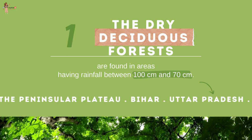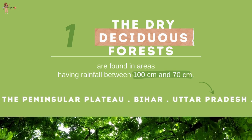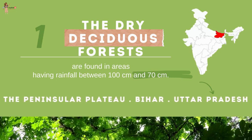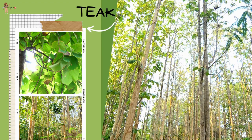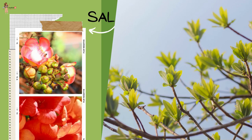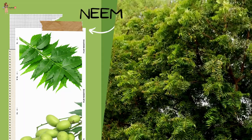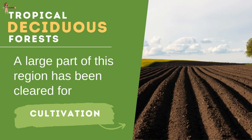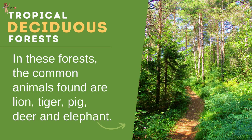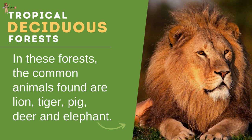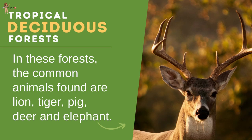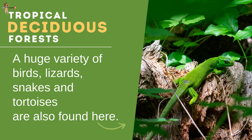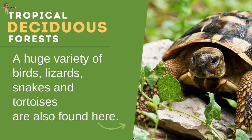The dry deciduous forests are found in areas having rainfall between 70 cm and 100 cm, in the rainier parts of the peninsula plateau and the plains of Bihar and Uttar Pradesh. Open stretches include chir, sal, peepal and neem. A large part of this region has been cleared for cultivation and some parts are used for grazing. Common animals in these forests are lion, tiger, pig, deer and elephant; a huge variety of birds, lizards, snakes and tortoises are also found here.